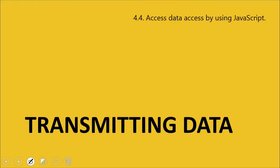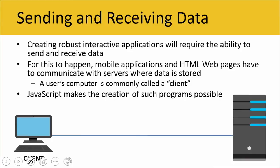Now let's talk about transmitting data. Using a web browser is really interesting, and creating robust interactive applications requires the ability to send and receive data. For this to happen, we have to be able to communicate with servers when we're on our phones and on our PCs and laptops and all those other great devices that we use. Note that a user's computer — our computers — are commonly called clients. We're able to send data back and forth with servers because of things like JavaScript, which make the creation of all of our programs possible.